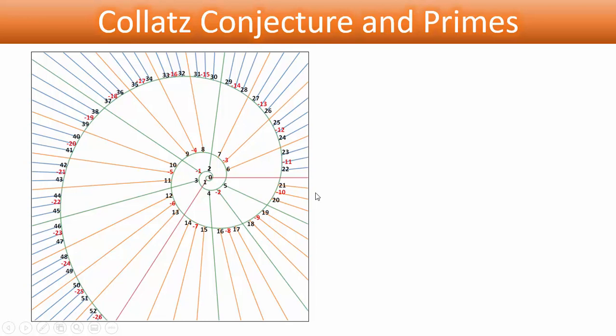As we have seen in video 1, this is the integer spiral that determines the spiral trajectory of any given number of the form 6x plus or minus 1.